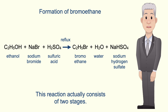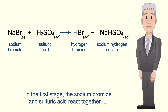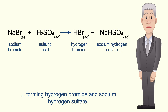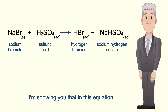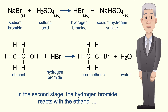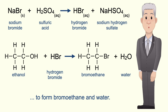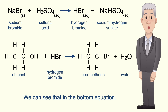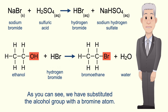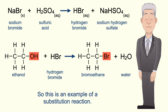This reaction actually consists of two stages. In the first stage, sodium bromide and sulfuric acid react together forming hydrogen bromide and sodium hydrogen sulfate. In the second stage, the hydrogen bromide reacts with the ethanol to form bromoethane and water. As you can see, we've substituted the alcohol group with a bromine atom, so this is an example of a substitution reaction.